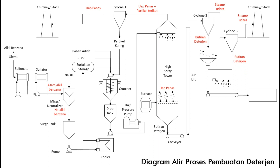Butiran dari cyclone 2 kemudian diumpankan menuju ke pengayak atau screen untuk mendapatkan butiran dengan ukuran sesuai standar. Butiran dari vibrating screen dan juga butiran dari cyclone 3 dialirkan menuju ke conveyor. Pada conveyor, ditambahkan pengharum dengan cara disemprotkan, yang kemudian diumpankan ke bagian packaging untuk di-packing sesuai dengan label dan kebutuhan konsumen.